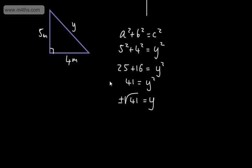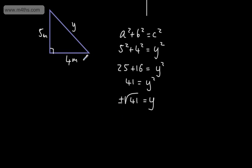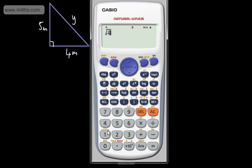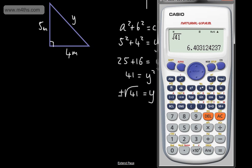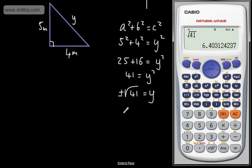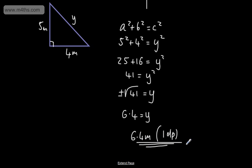Clearly in this case it's going to be the positive root, because it's a length. The positive square root of 41 gives us 6.4 to one decimal place. So y equals 6.4 metres. That's how we can use a quadratic equation in context.